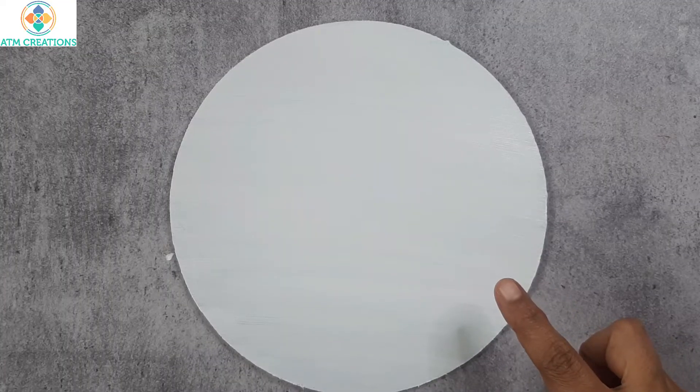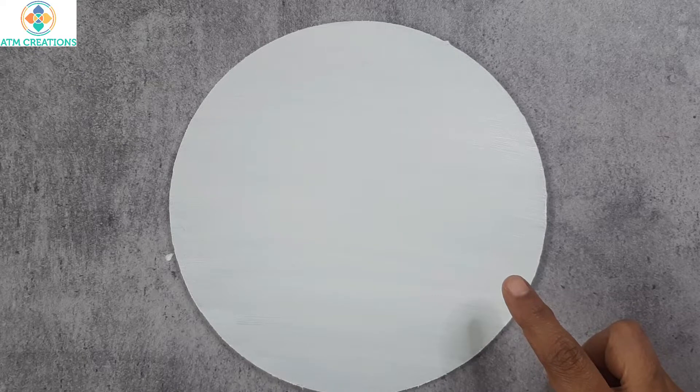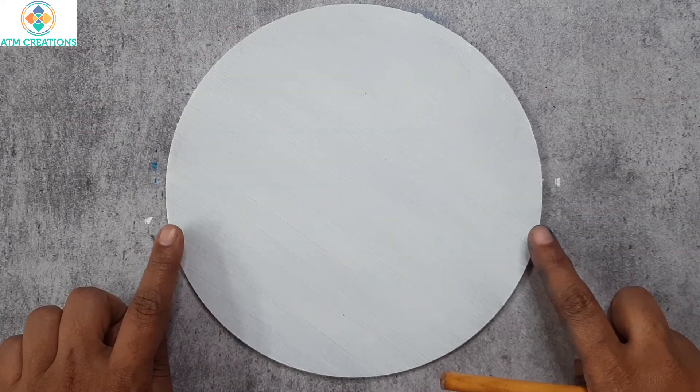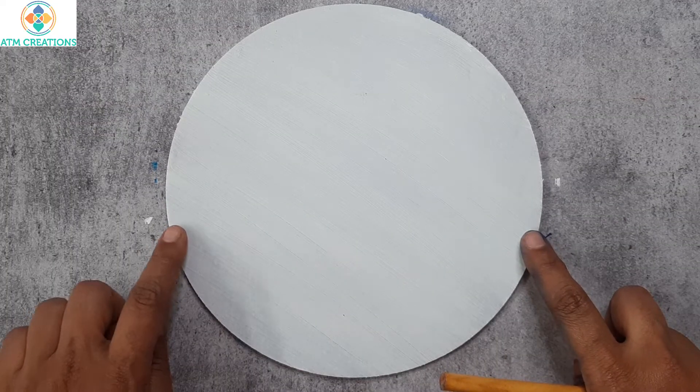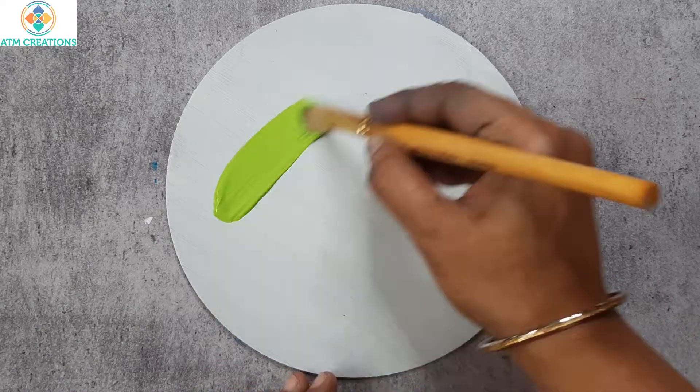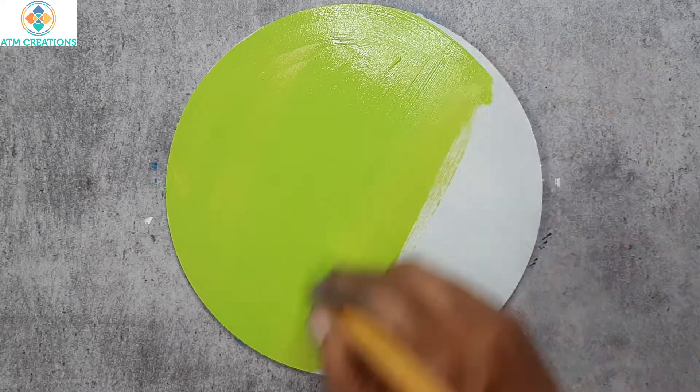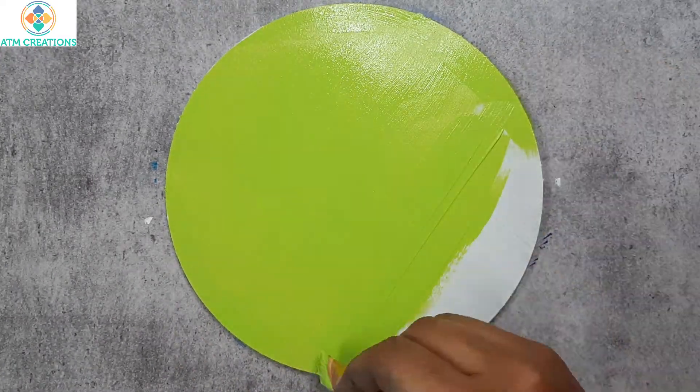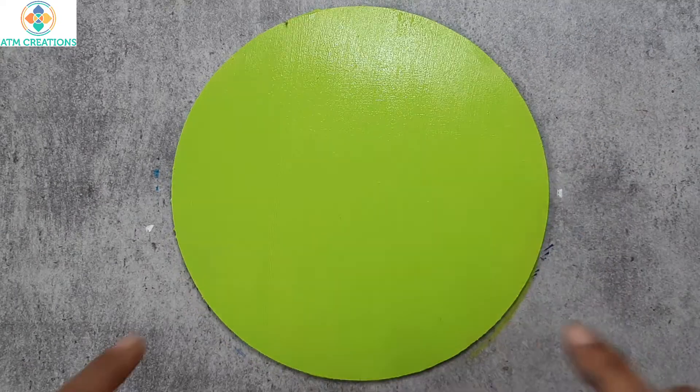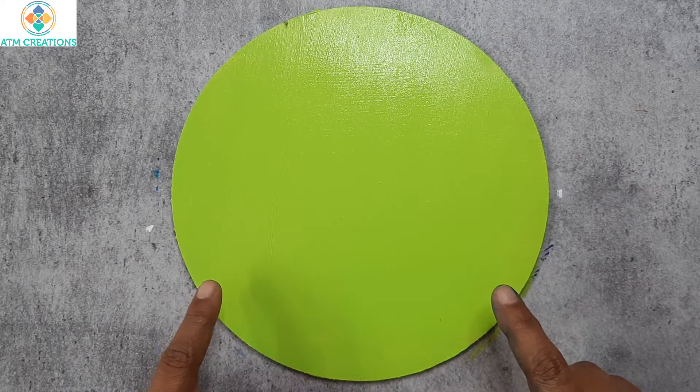The board is painted in white. I'm going to let this dry for half an hour and then base paint it in some other color. Now that the white base is fully dry, I'm going to base paint it in green. I have now base painted the board in green and I'm going to let this dry for some time before I draw any design on it.